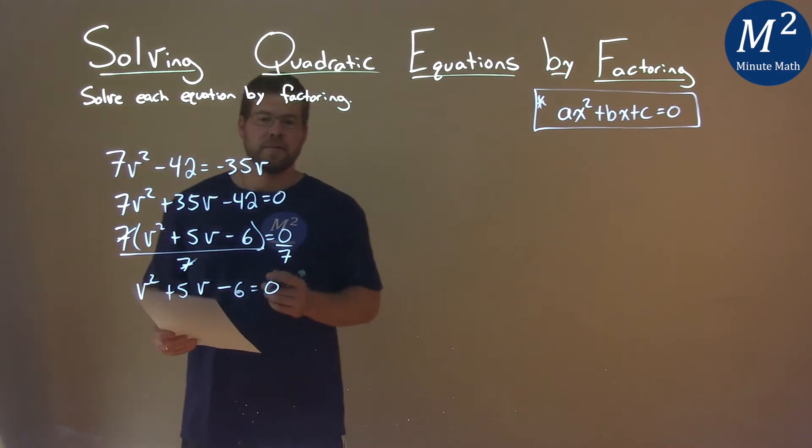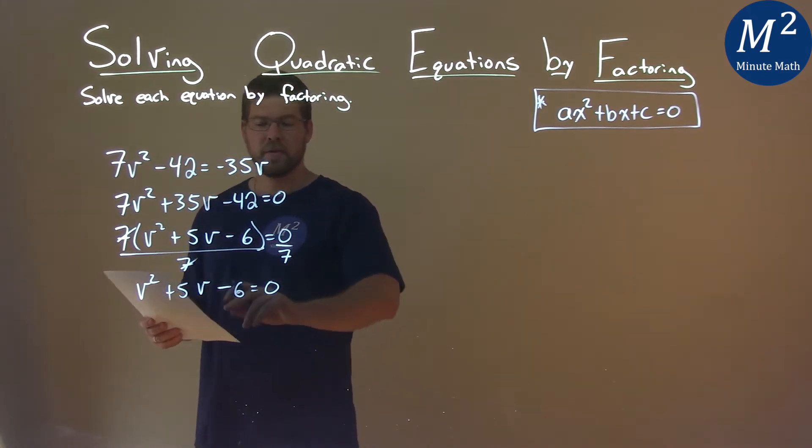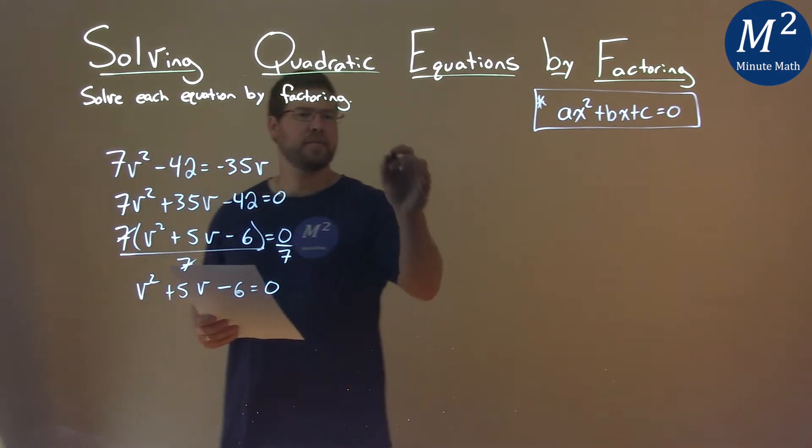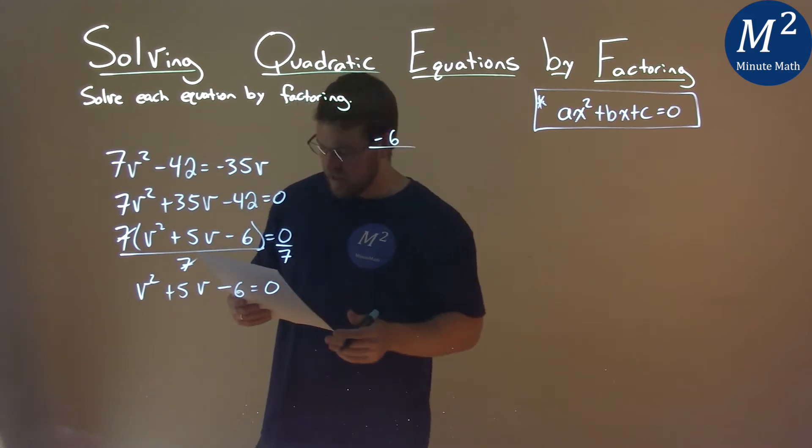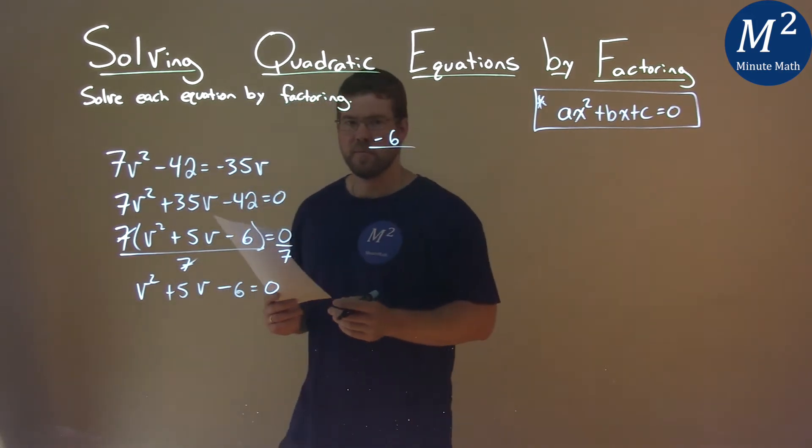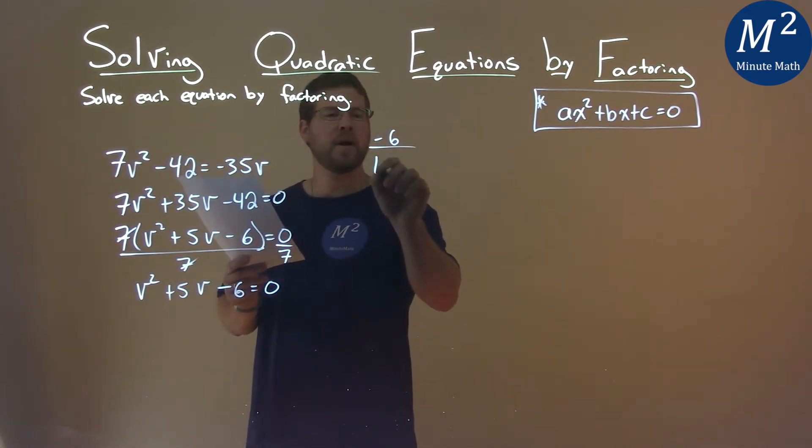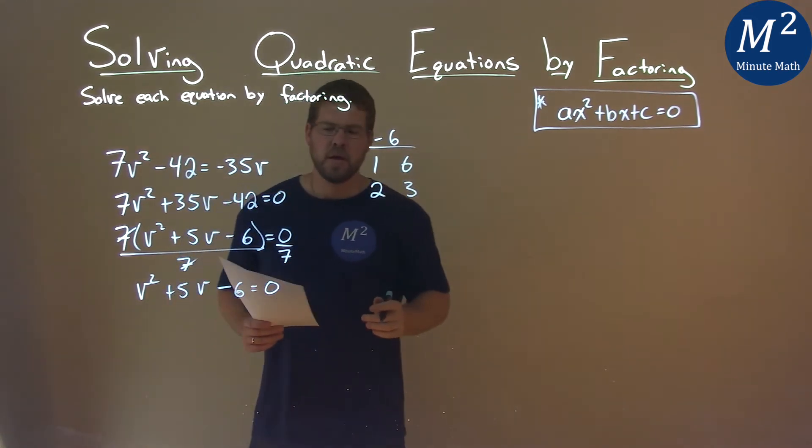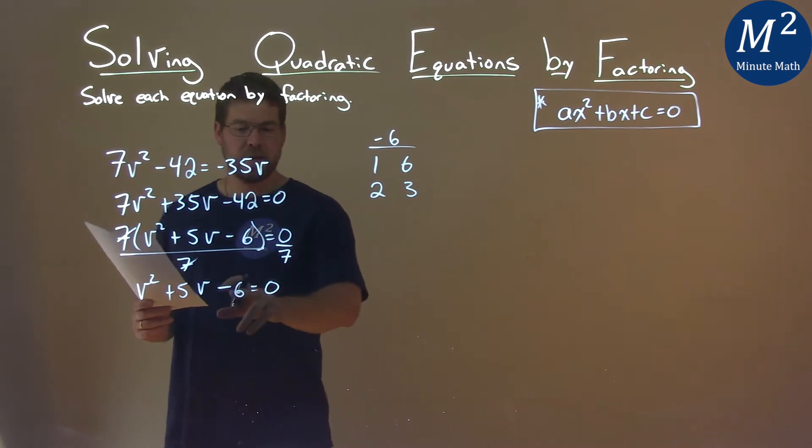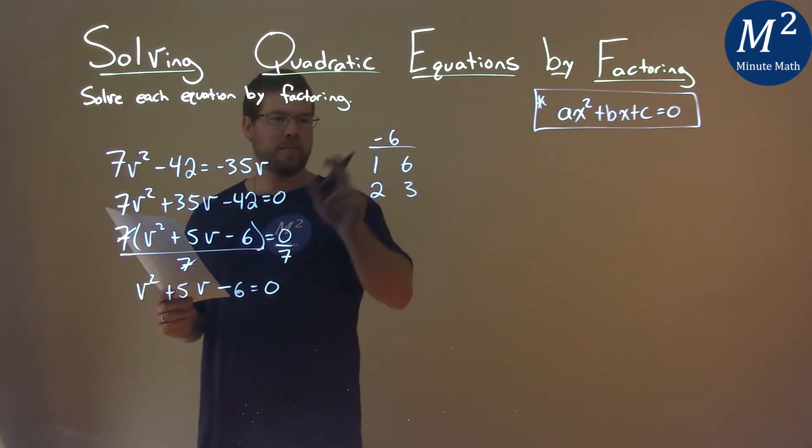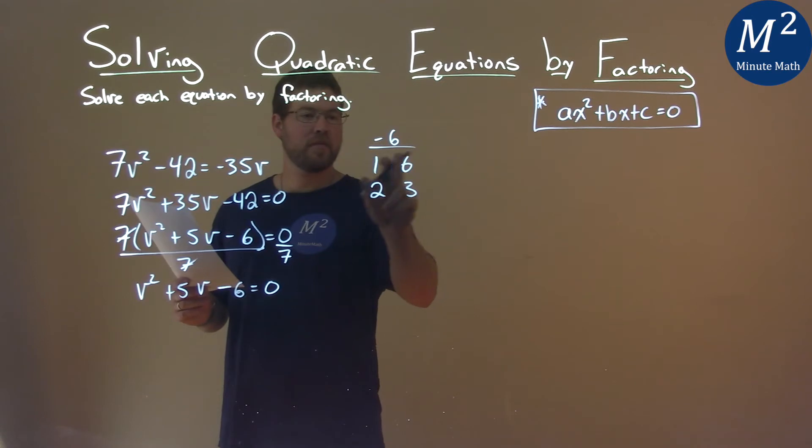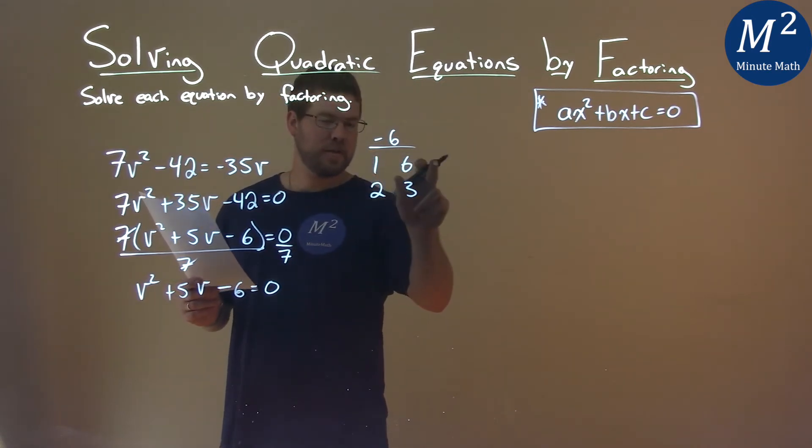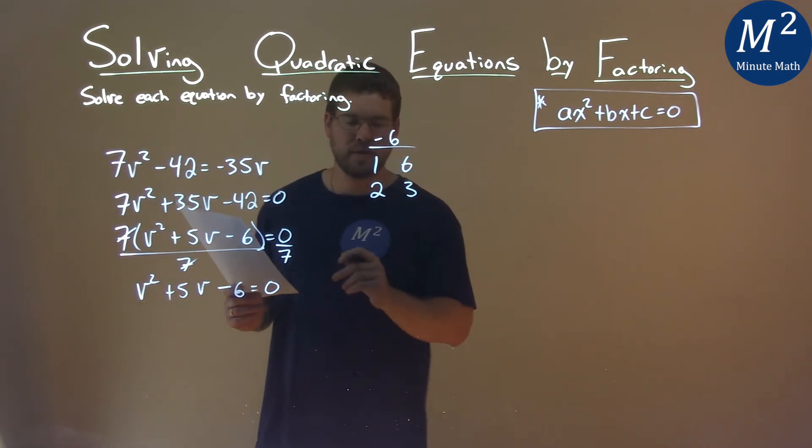So where do we go from here? Well, now we have to factor this. I look at my c value, the negative 6, and I'm thinking, what two numbers multiply to be 6? That's 1 and 6, and 2 and 3. Now, one of them will have to be negative. That's basically what happens if we have a negative 6. If we multiply one of these together, one of them being negative, it gives us negative 6.